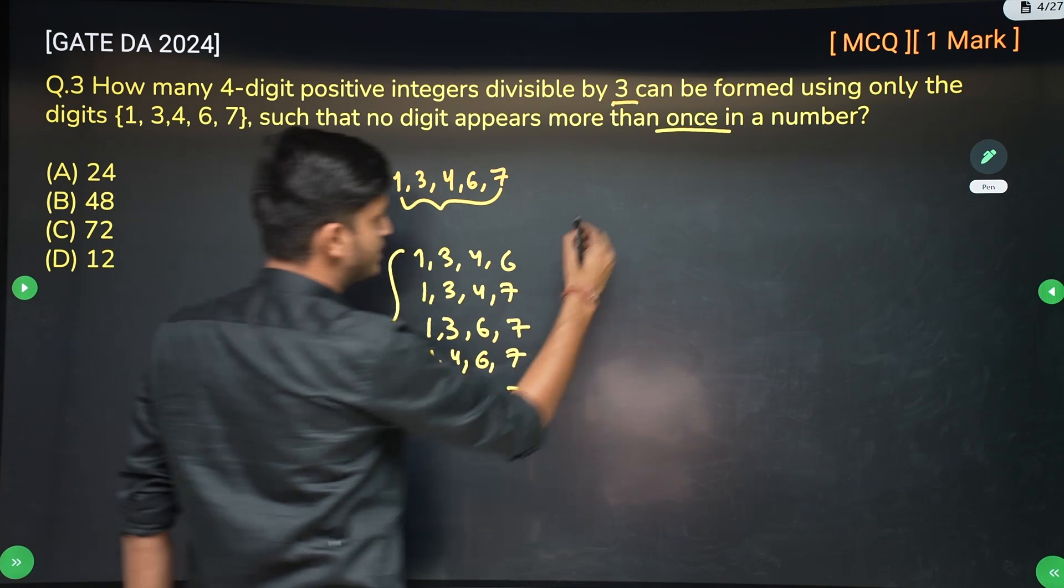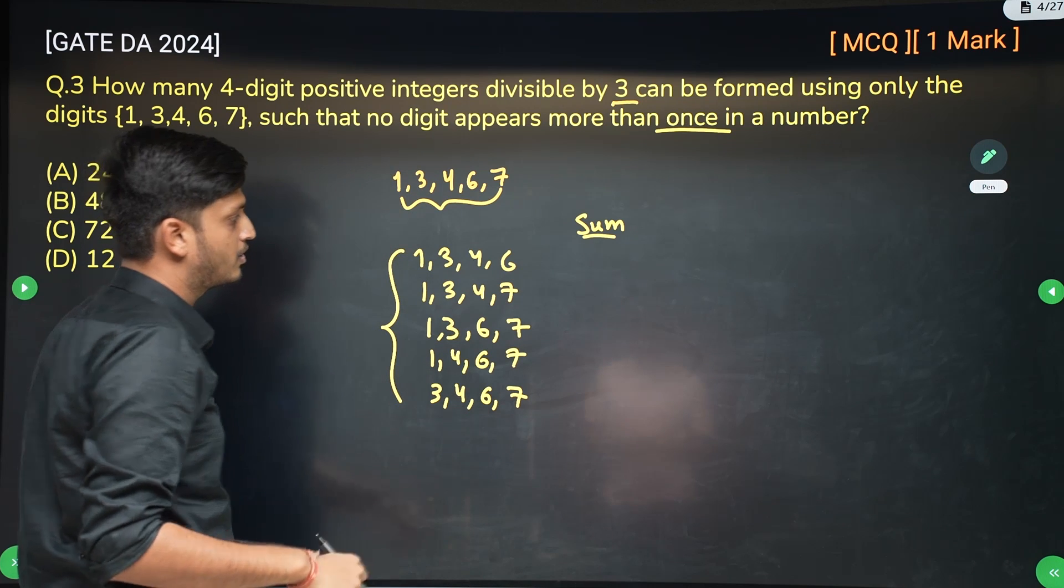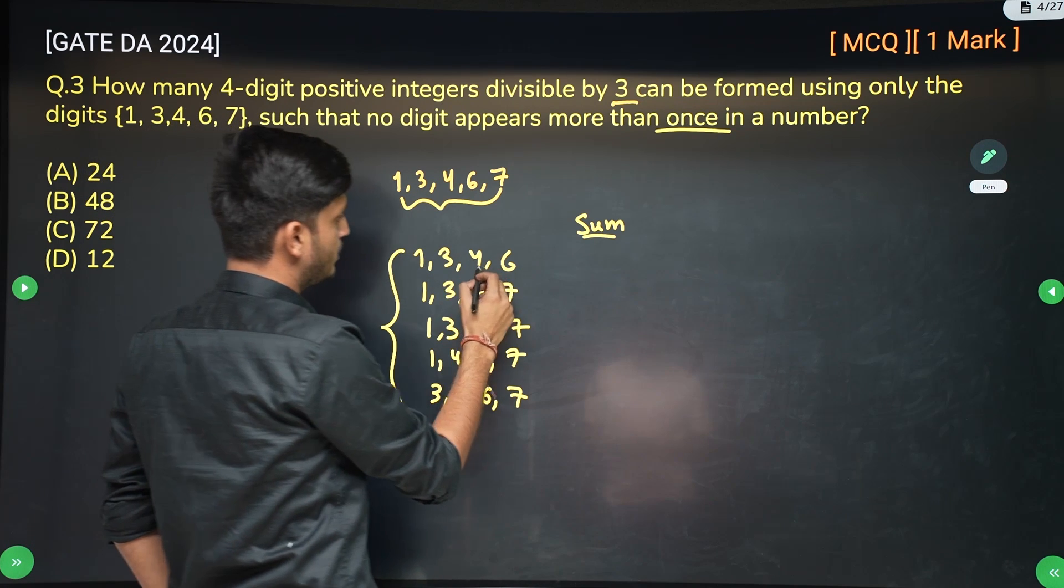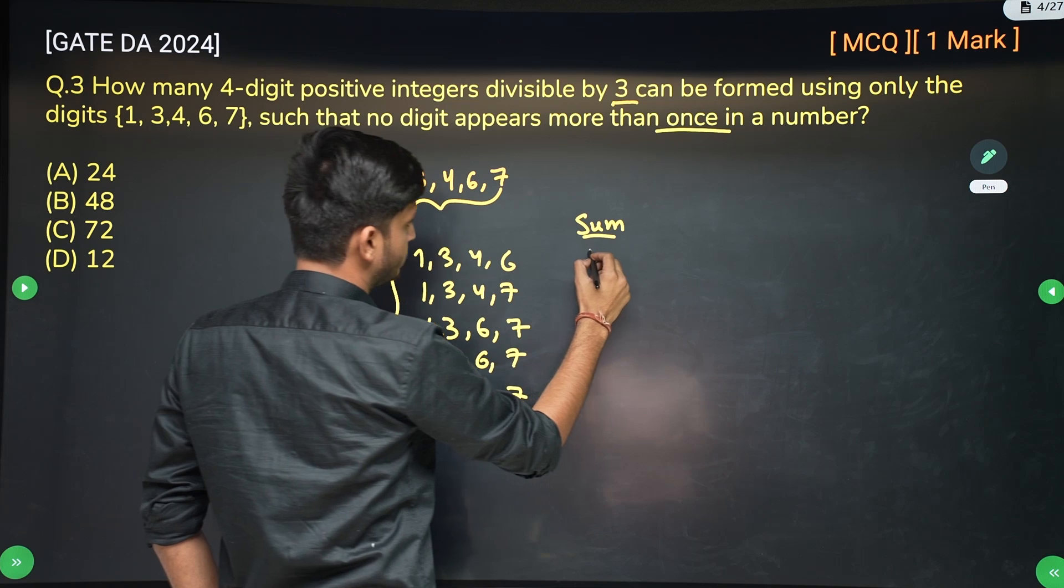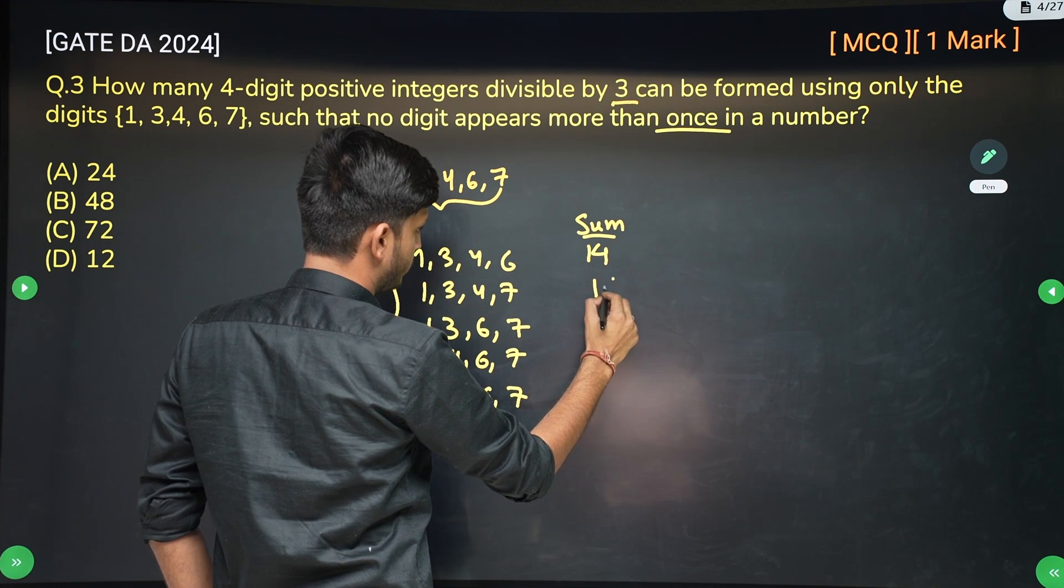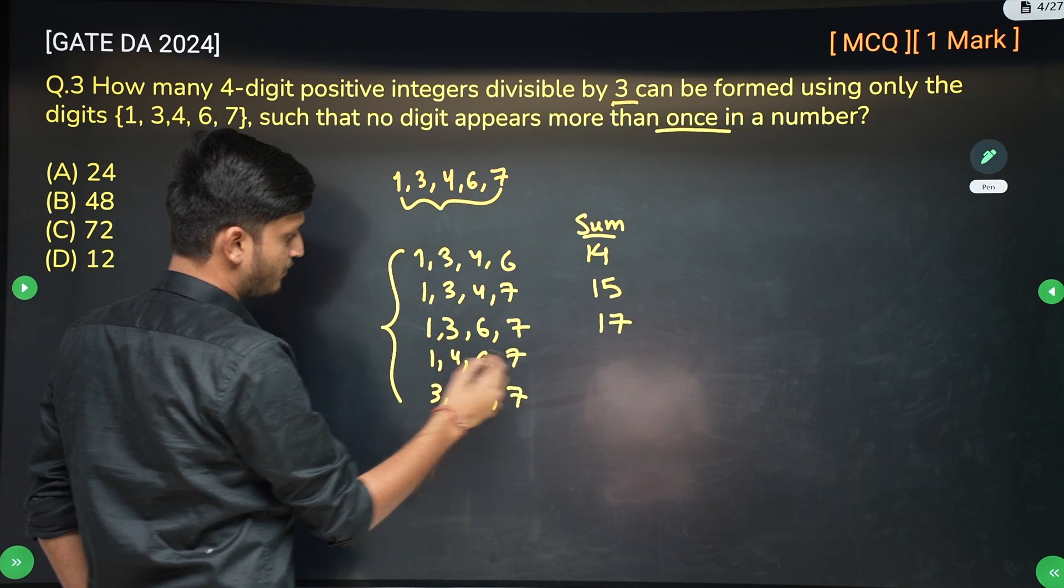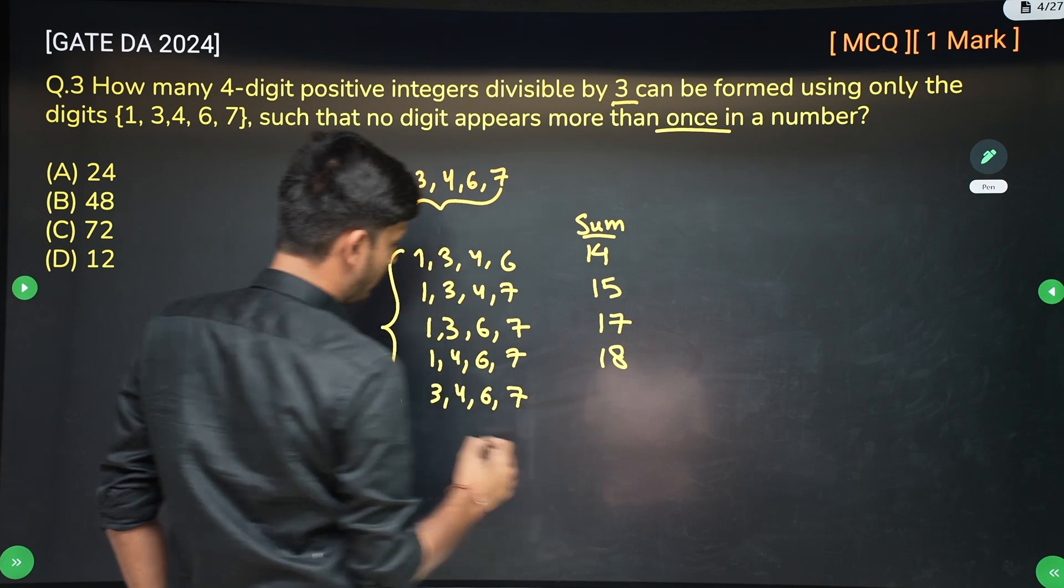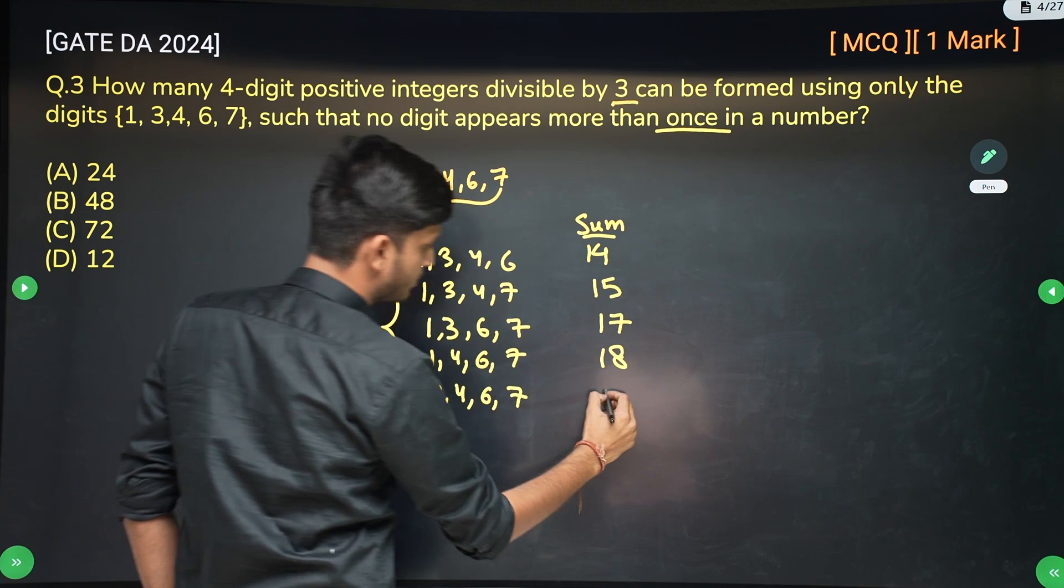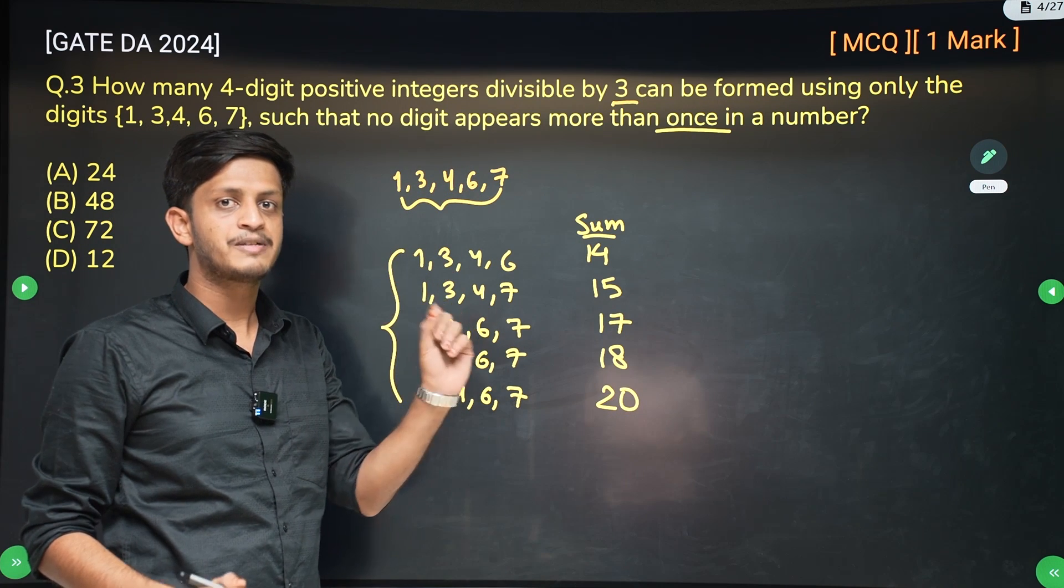Now if you just write the sum of the digits, you will know what all selections are allowed. So sum of the digits is what? Here 10, 13, 14. And here we have 15. Here the sum of digits is 17. Here the sum of digits is 11, 7, 18. And here the sum of digits is 20.